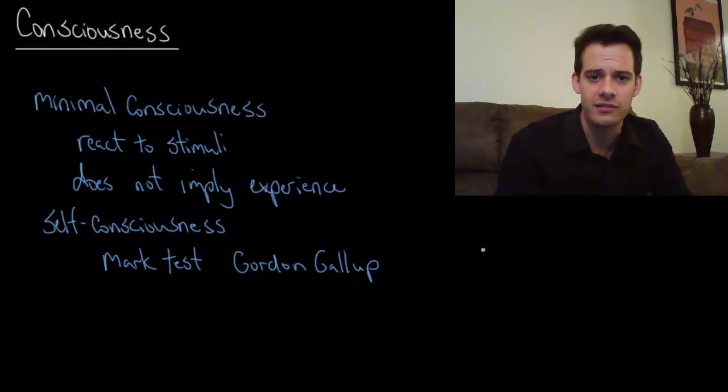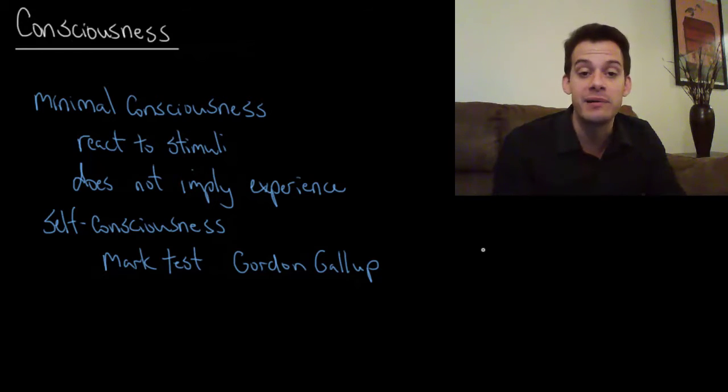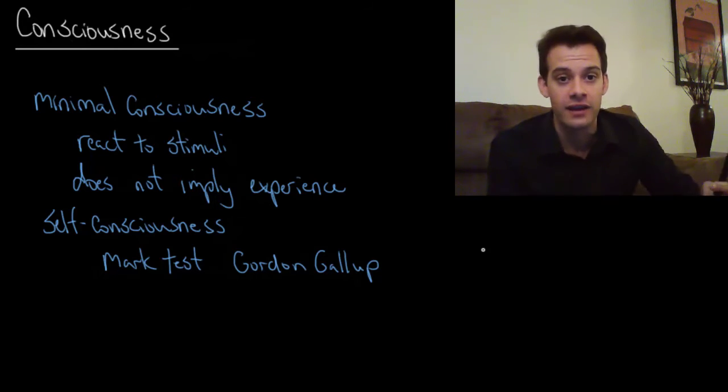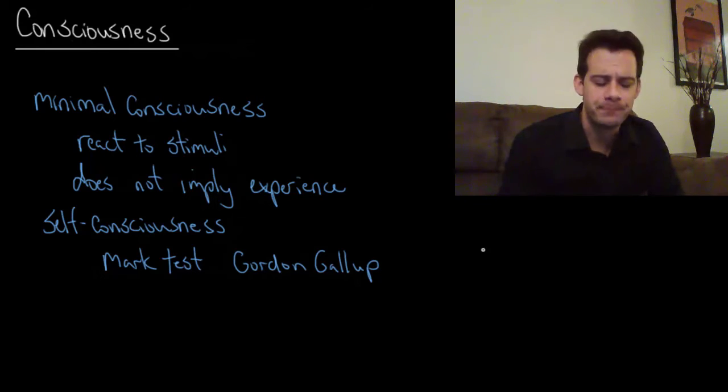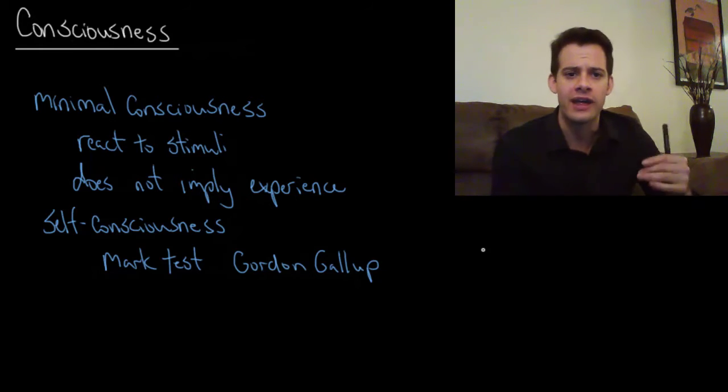And Gallup worked with chimps to see if they had some level of self-consciousness. And so what the mark test refers to is you give the animal some experience with mirrors. So in Gallup's case he gave chimps access to mirrors. Of course the first time an animal sees a mirror it might think that that's another chimp. But he hoped that over time the chimps would learn to recognize themselves in mirrors. They would sort of understand how mirrors work and know that that's not another chimp, that's me.